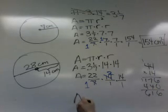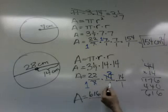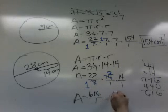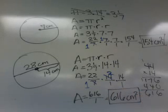So the area is 616 over 1 times 1 times 1 is 1, which is 616 centimeters squared. And there is the area of that circle.